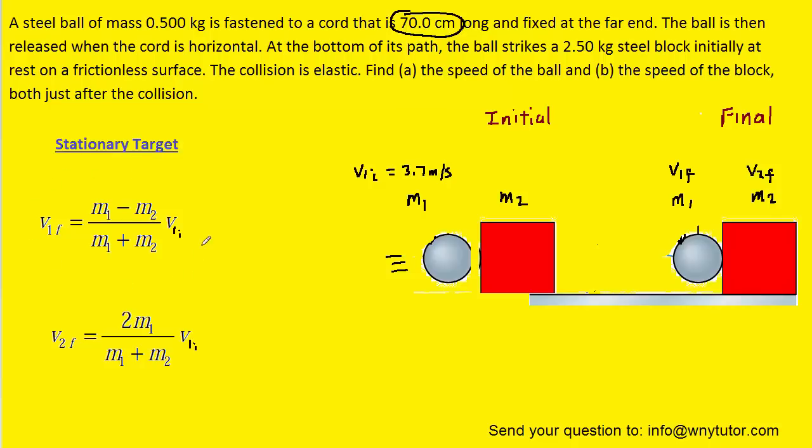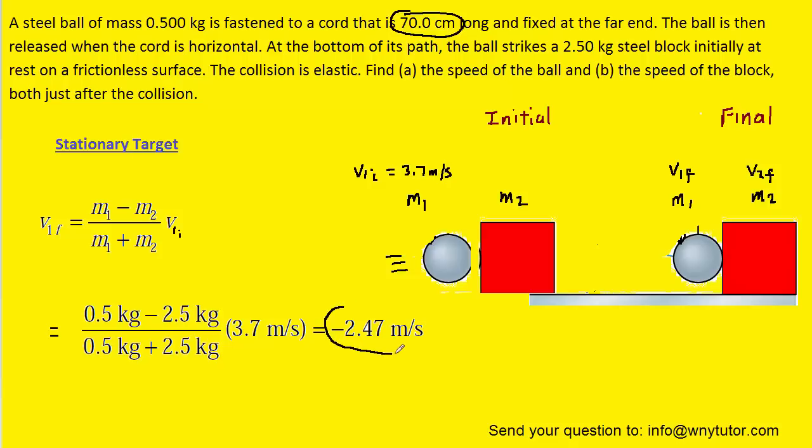So we'll go ahead and use the first equation to solve for the final velocity of object one. And we'll be plugging in the initial velocity of object one that we found earlier, as well as the masses. So there we went ahead and plugged in all the known values. When we calculate that, we get a final velocity for the steel ball, or object one, of negative 2.47 meters per second.